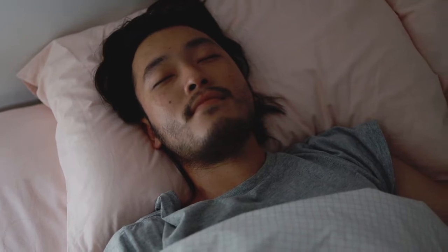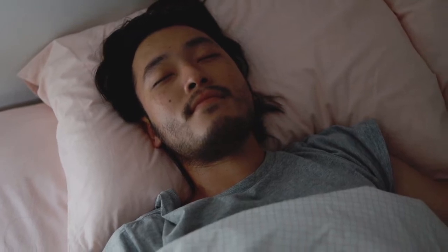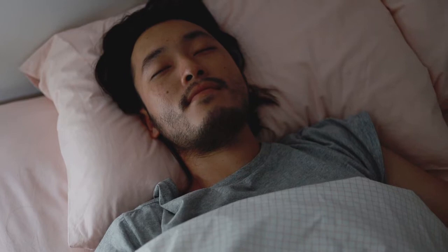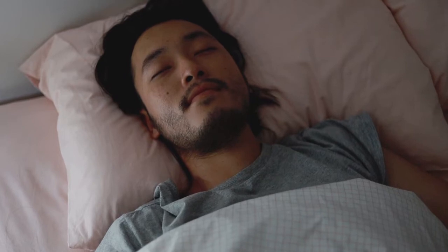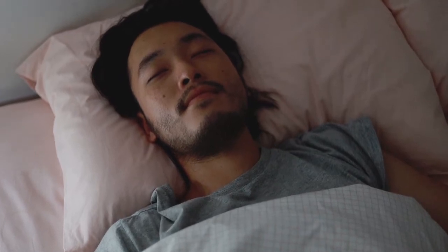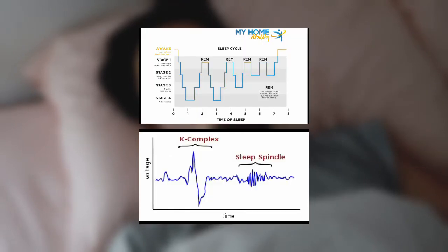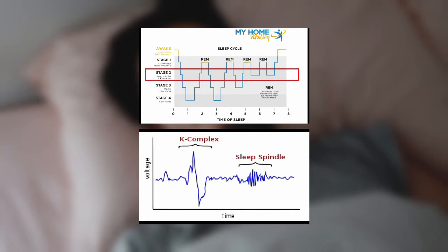This method is particularly useful during sleep, where other methods such as fMRI present logistical and practical problems. Sleep spindles mainly occur during the second stage of sleep, NREM2, and in fact are the primary feature we look for to classify this stage of sleep.